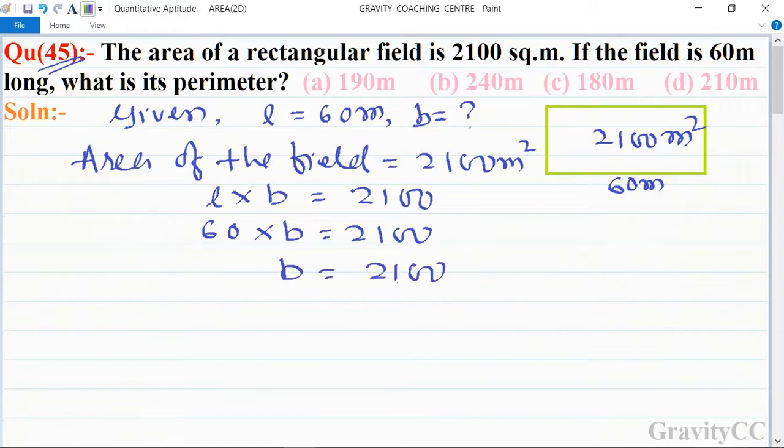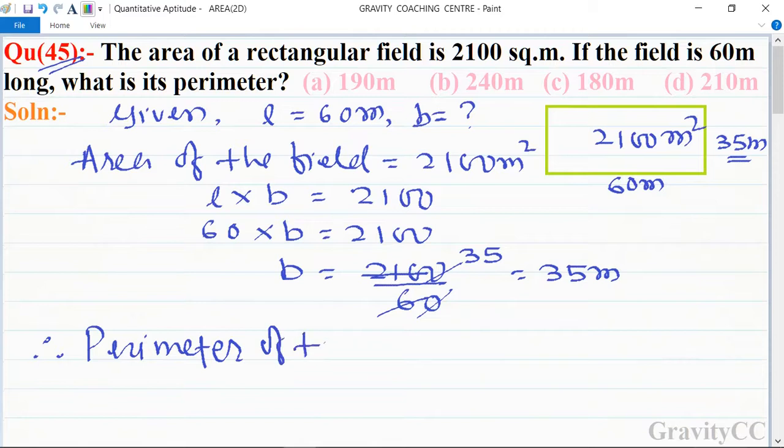...equal to 2100 divided by 60. So zeros cancel, and divide by 6 - 6 into 21 is 3 with remainder 3, giving 35. So width is 35 meters. Therefore, perimeter of the field is equal to 2...